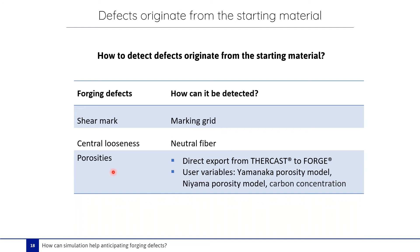We didn't talk about porosities — these are defects that can happen during casting. Thanks to the direct export from Thercast to Forge, it is possible to follow the evolution of porosity and carbon concentration during the forging simulation. In Forge, several user variables are available, such as Yamanaka or Nyama porosity models and a carbon concentration user variable. It is possible to model the casting simulation in Thercast and then follow the porosity evolution in Forge.